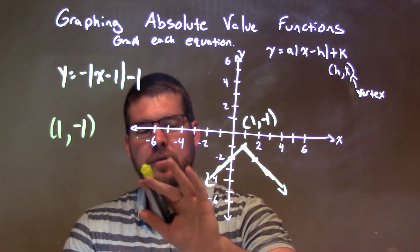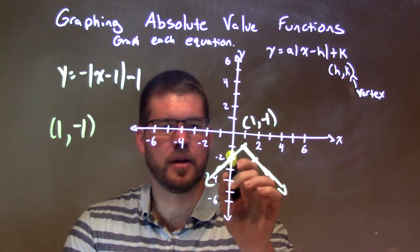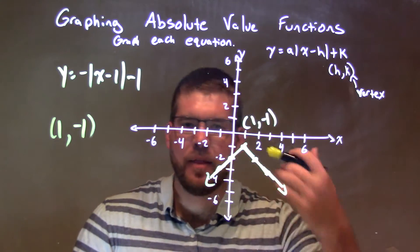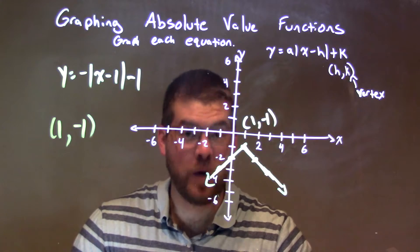Mirror that to the left. Flip the arrow, down 1 to the left 1, down 1 to the left 1. Connect the dots. There we get our final answer and our graph.